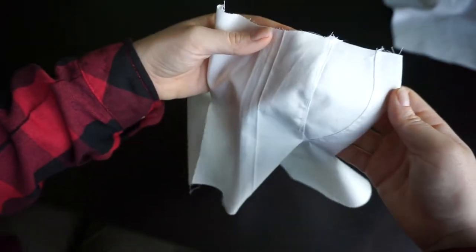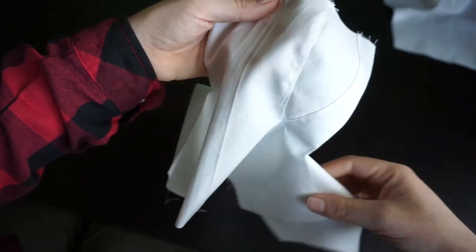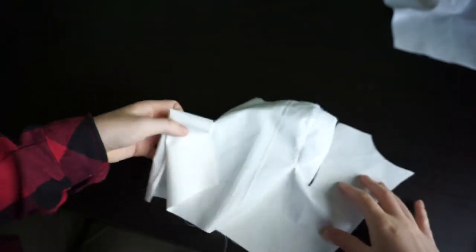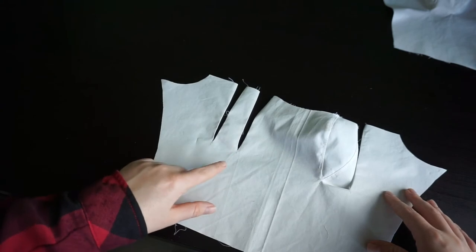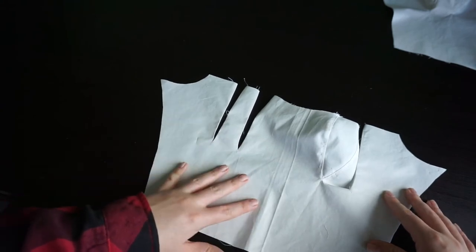So this is what it looks like for a single gusset. Now we've got three more to go on this side, and then we also have four more to go on the lining part. And a bit of stitching later, all eight gussets are in. We have the gussets for the outside and the lining part.